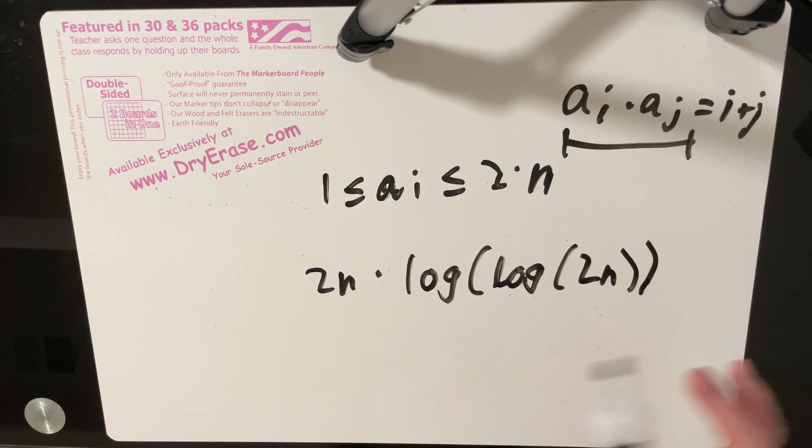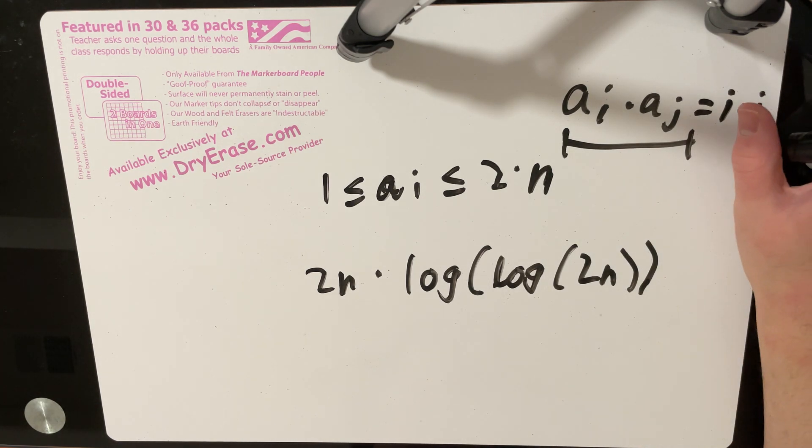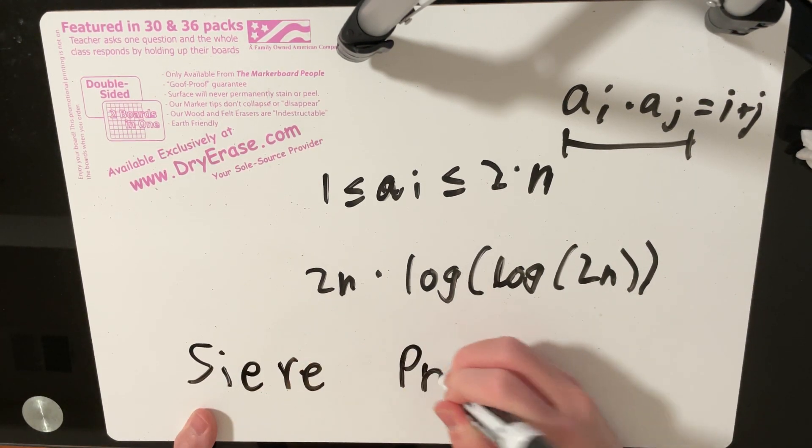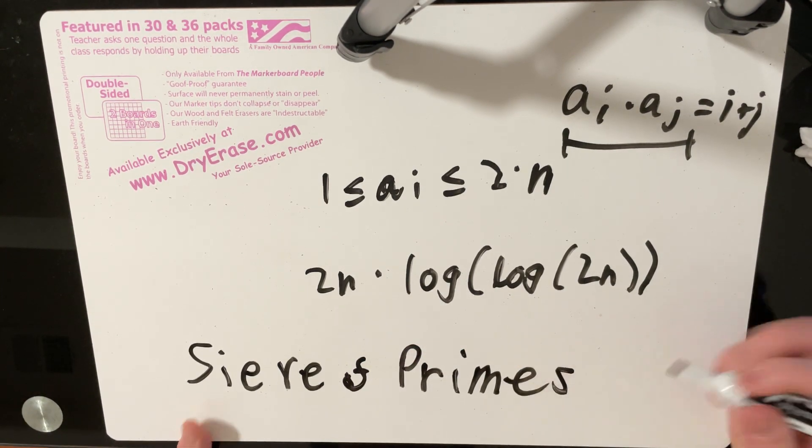There's a proof for this. I'm not going to go into the proof for that because it's way beyond the scope of this problem, but if you're interested in it, then you can definitely just Google like sieve of prime numbers and I'm sure something will pop up.